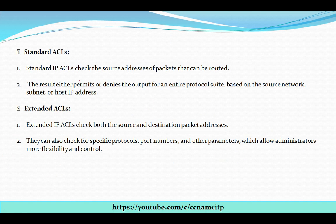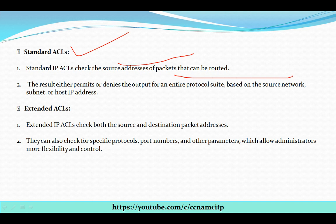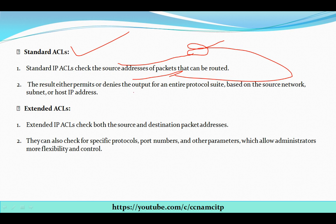Now we will see standard ACL in a bit more detail. Standard IP ACL checks the source address of the packet — which packet is trying to be routed or which packet can be routed. It then permits or denies the entire protocol suite based on the source network, subnet, and host address.